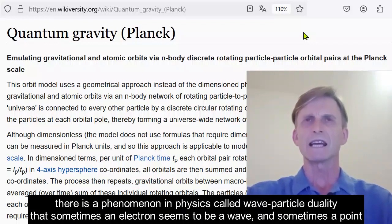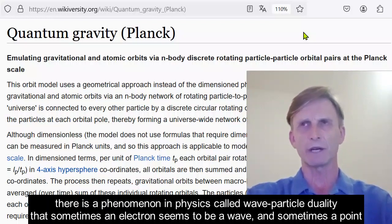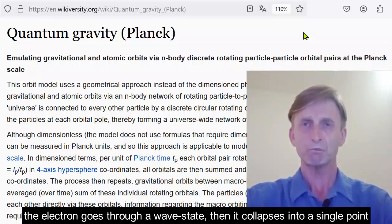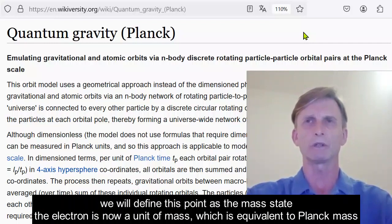There is a phenomenon in physics called wave-particle duality, that sometimes an electron seems to be a wave and sometimes a point. What we do here is replace that duality by a wave-to-point oscillation. This simplifies our calculations immensely. The electron goes through a wave state, then it collapses into a single point.